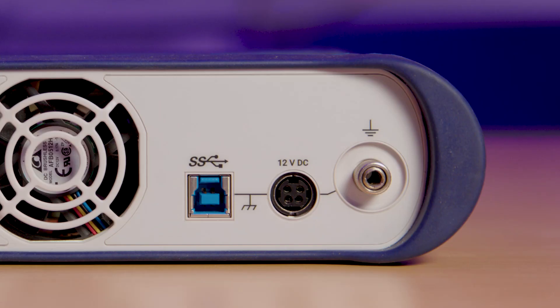Then we have the USB 3 port to connect the PC and the DC power input. To unlock the full power of the 6000e scopes,